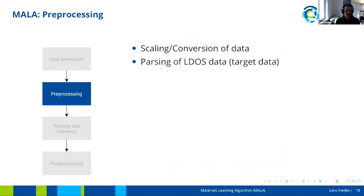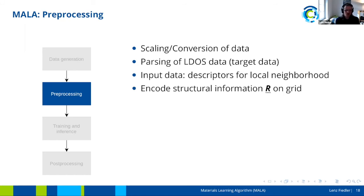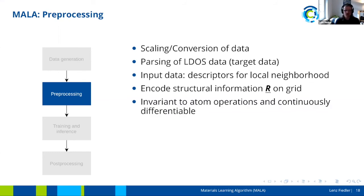After generating data, we need to pre-process it — some standard steps like scaling and unit conversion. We also have to encode the structural information of the atomic positions on the grid. Since the LDOS is given per grid point but atomic positions are not, we choose descriptors that describe the local neighborhood of each grid point. These descriptors must be invariant to atomic operations such as translation, rotation, and permutation of atoms, and they must be continuously differentiable.